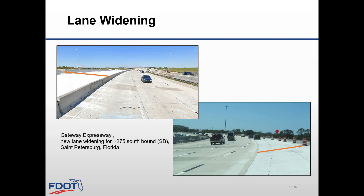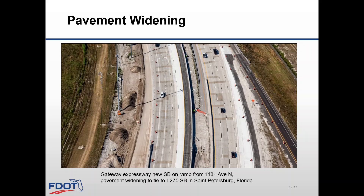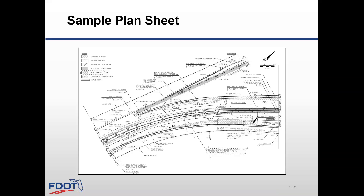These are pictures of lane widening for the Gateway Expressway I-275 southbound in St. Petersburg, Florida. This is widening of a new receiving lane for a new ramp from 118th Avenue North to southbound I-275. This is an aerial view of the concrete lane widening for the same project. As you can see, there is still MOT and construction being done. Here is a sample plan sheet showing the Gateway Expressway new southbound on-ramp from Roosevelt pavement widening to tie to the I-275 pavement.